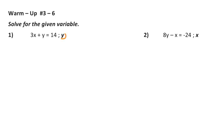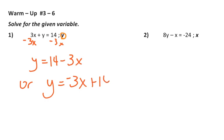Number one, we're going to solve for y. So I'm trying to get y by itself. I'm going to subtract the 3x from both sides, and I get y equals 14 minus 3x, or you could write y equals negative 3x plus 14. It doesn't matter.